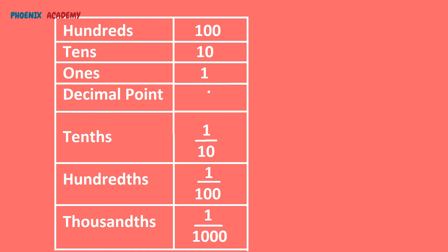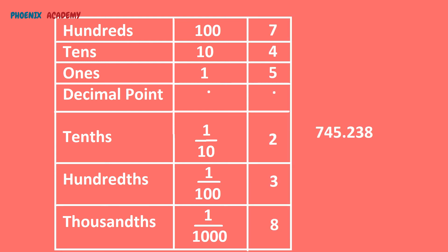Expanded form of decimals: we write the expanded form of decimals with the help of a place value chart. Here is the place value chart for decimal numbers up to 3 decimal places. We will write the place value of each digit in 745.238 — that is, 7 hundreds, 4 tens, 5 ones, 2 tenths, 3 hundredths, 8 thousandths.